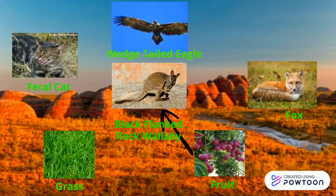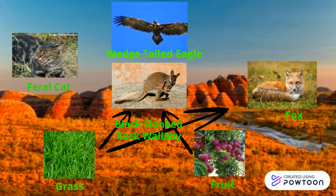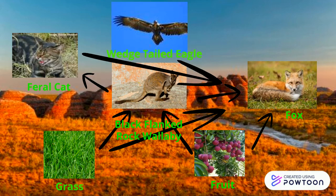The food web: fruit is eaten by the Black-Flanked Rock Wallaby. Grass is eaten by the Black-Flanked Rock Wallaby. Grass is eaten by the fox. Fruit is eaten by the fox. The Black-Flanked Rock Wallaby is eaten by the fox. The Black-Flanked Rock Wallaby is eaten by the feral cat. The fox is eaten by the feral cat. The Black-Flanked Rock Wallaby is eaten by the wedge-tailed eagle. The fox is eaten by the wedge-tailed eagle. The feral cat is eaten by the wedge-tailed eagle.